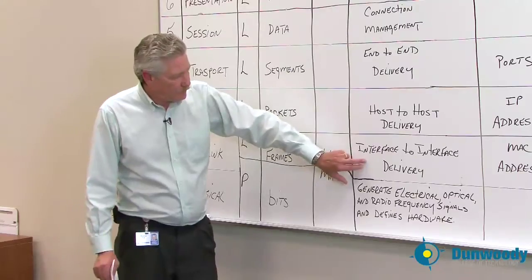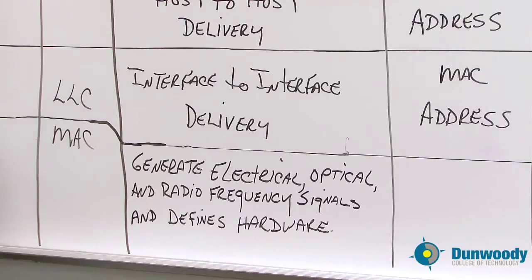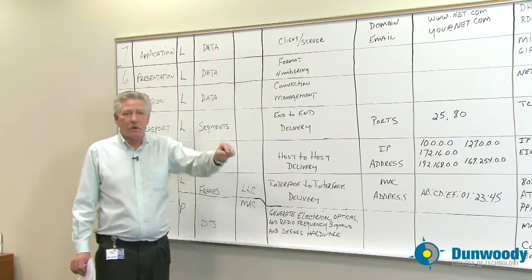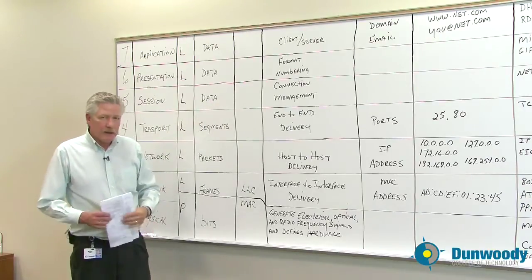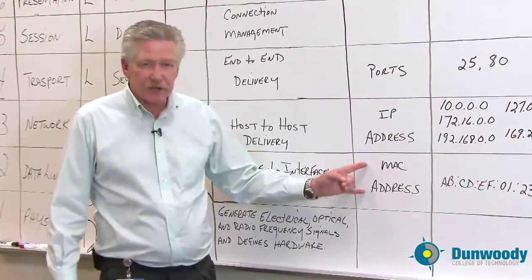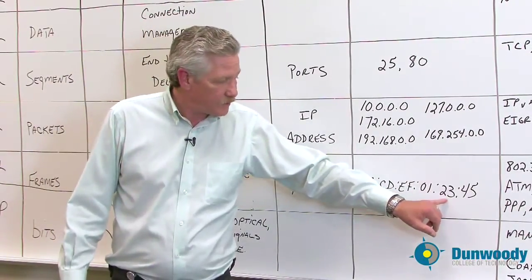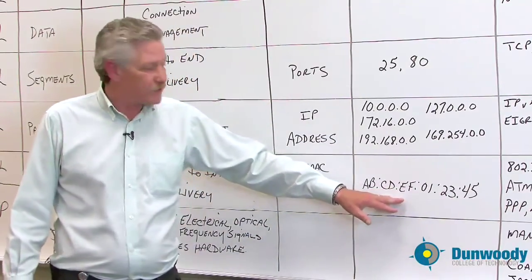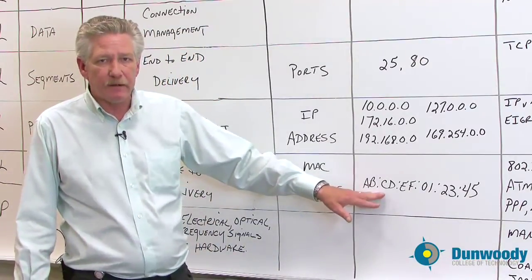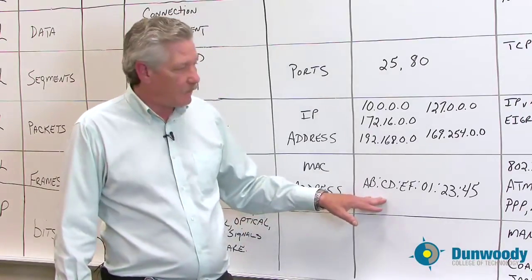At the data link layer, that's where the interface-to-interface delivery is — meaning interface being the NIC on your laptop, whose next hop would possibly be a switch in the classroom or hidden in a closet near your classroom. It's from network interface card to network interface card. Its address is a MAC address — for example, AB:CD:EF:01:02:45. A real MAC address would not look like this — it would be a jumble of these things — but it's always six octets. That number is unique to every network interface card, kind of like your social security number, so we can find you on the internet.